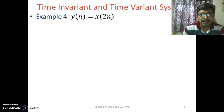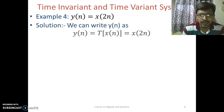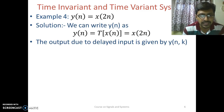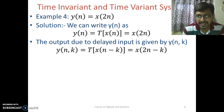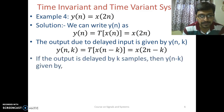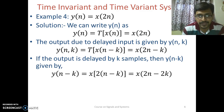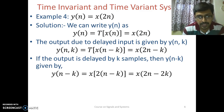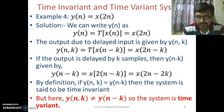Now we consider a discrete time system y[n] whose output is given by y[n] = x[2n]. We follow the same steps: we delay the input by k samples, giving y(n, k) = x[2n − k]. Now if the output is delayed by k samples, we replace n by (n − k) in the equation of y[n], getting x[2(n − k)] = x[2n − 2k]. We can observe that y(n, k) and y[n − k] are not equal, so the system is time variant.